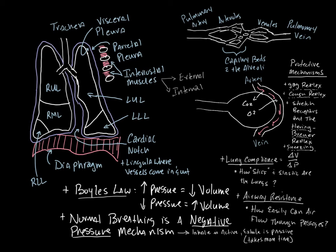An example of poor compliance is pulmonary fibrosis, where fibrotic scar tissue makes the lungs unable to open up. ARDS is another example — when surfactant is lost, surface tension increases and the lungs collapse down. An example of over-compliance is emphysema, where large open air pockets develop, air trapping occurs, and patients can't exhale because their lungs are too compliant.